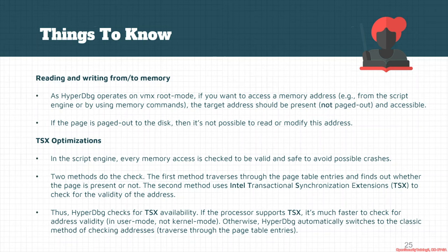There are two methods of checking whether an address is valid. The first method is traversing through the page table, finding the corresponding page, and checking whether the page attributes or present bit indicate the page is present. HyperDbg uses this approach for most kernel or VMX root functionalities. When checking address validity in user mode, HyperDbg uses TSX, because TSX transactions will fail if an address is invalid — making memory checks much faster. If TSX is not available on your system, HyperDbg automatically switches to the classic page table traversal method.